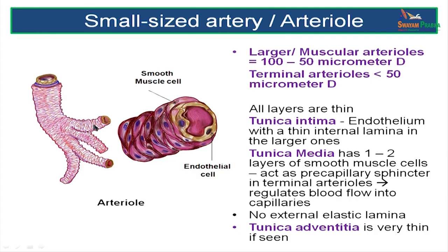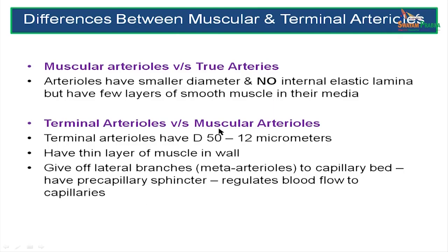Here you can see an arteriole with smooth muscle cells in its wall, one endothelial cell and another endothelial cell forming the lumen of the arteriole. Arterioles have a smaller diameter and no internal elastic lamina, but they have one to two layers of smooth muscle in their media. Terminal arterioles are smaller, have a thinner layer of smooth muscle, and give off branches called meta-arterioles which enter the capillary bed. They have pre-capillary sphincters which regulate blood flow into the capillary plexus.